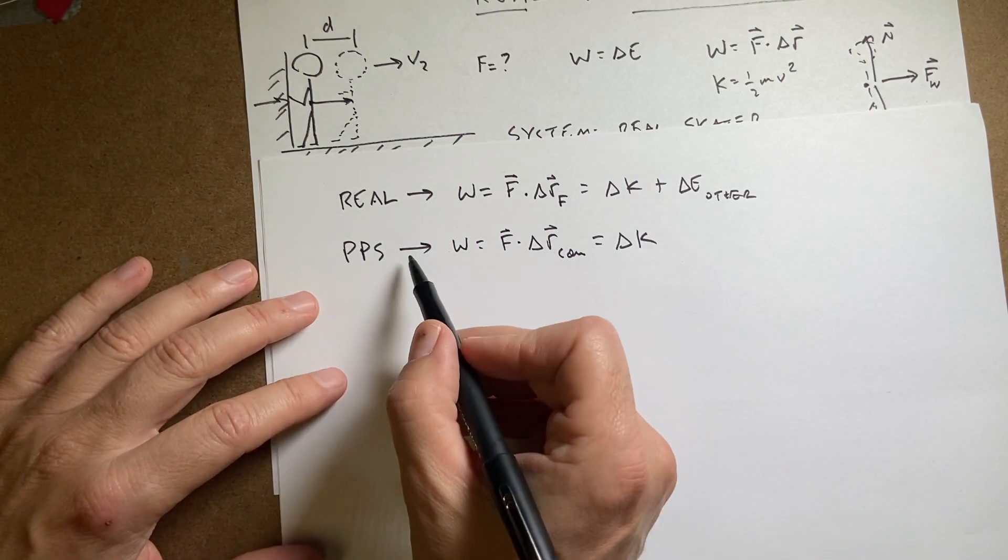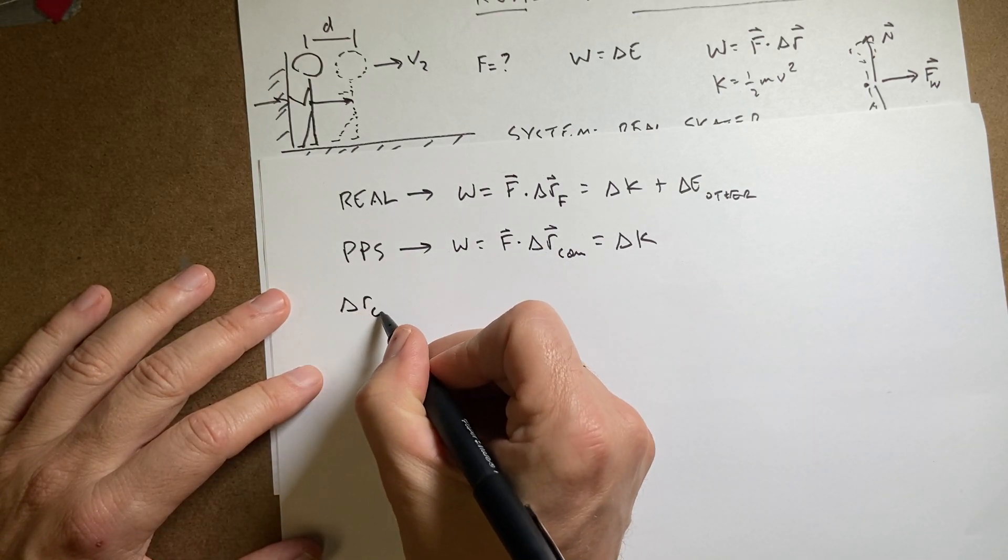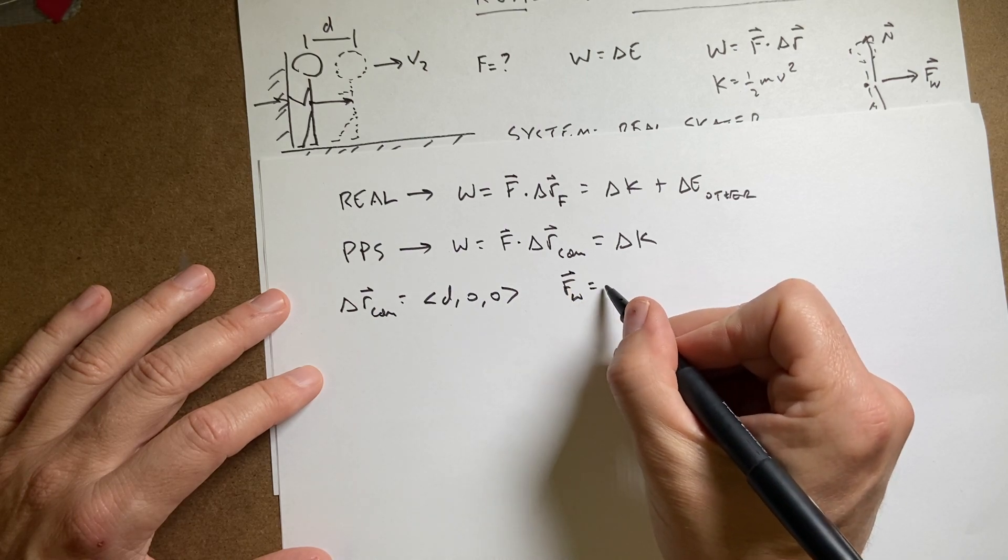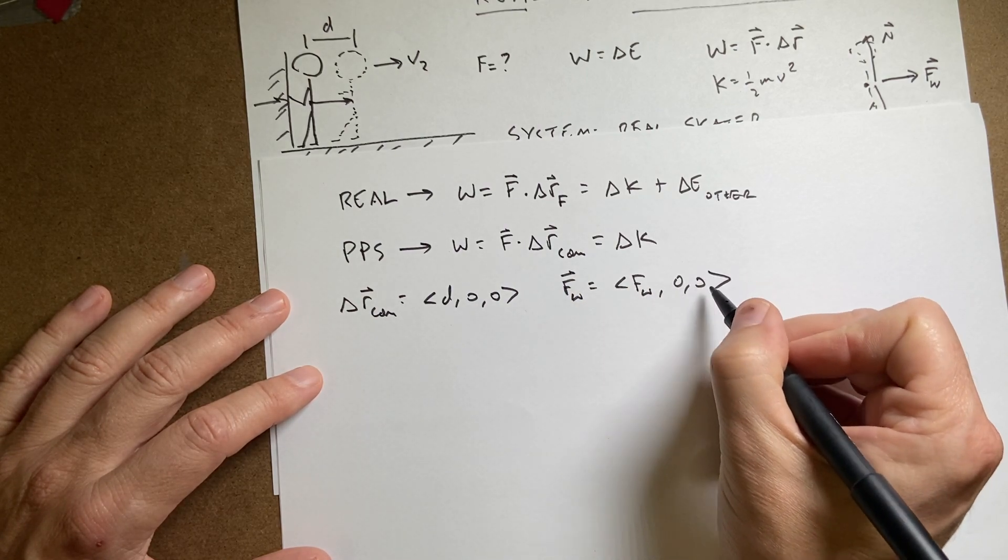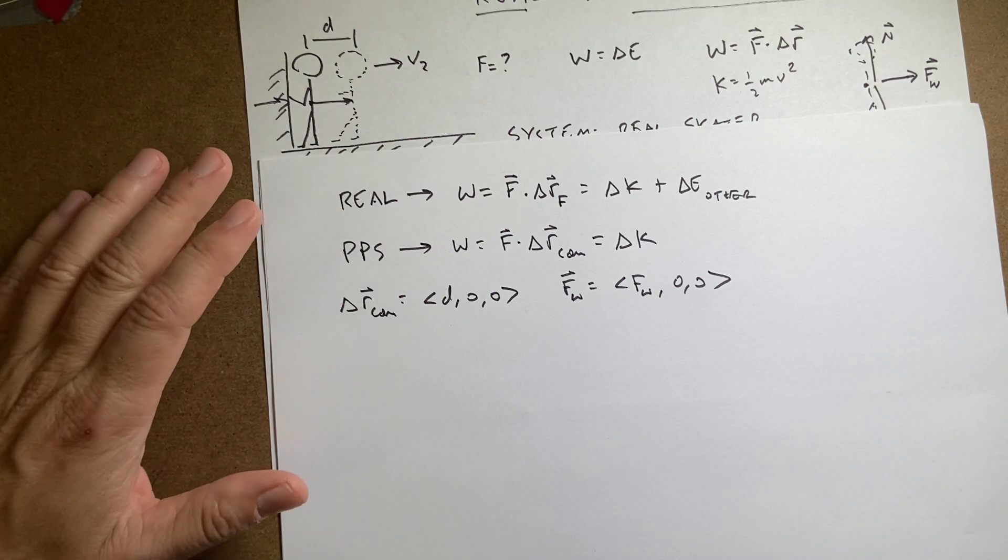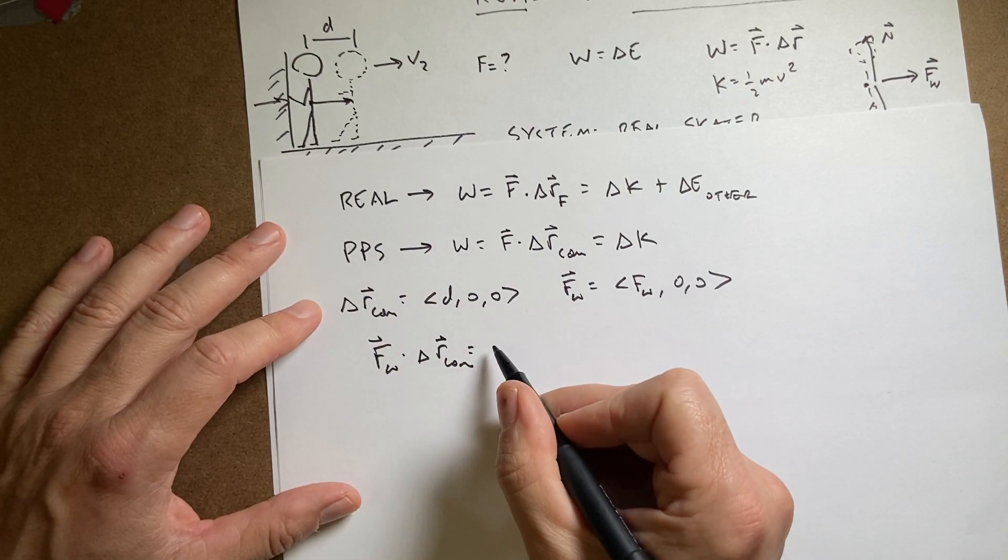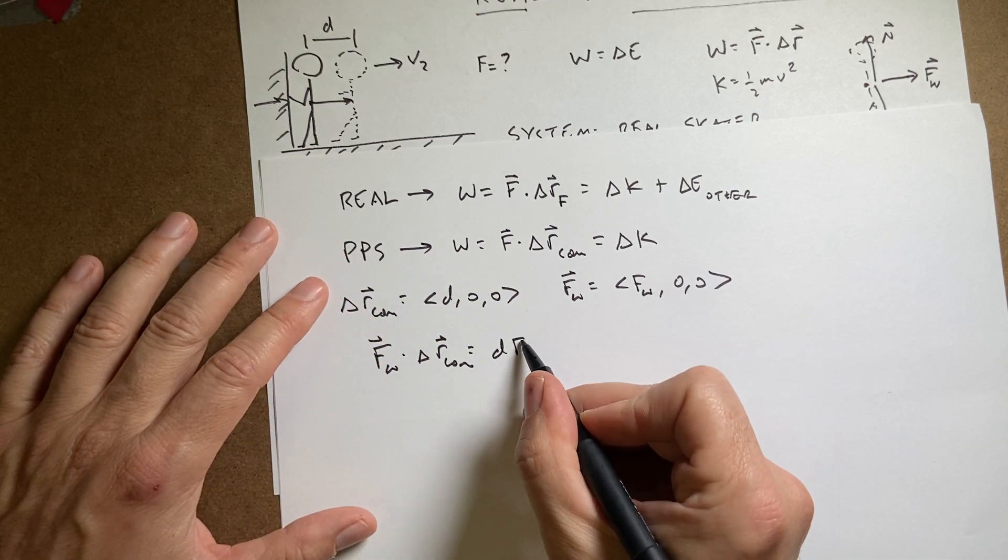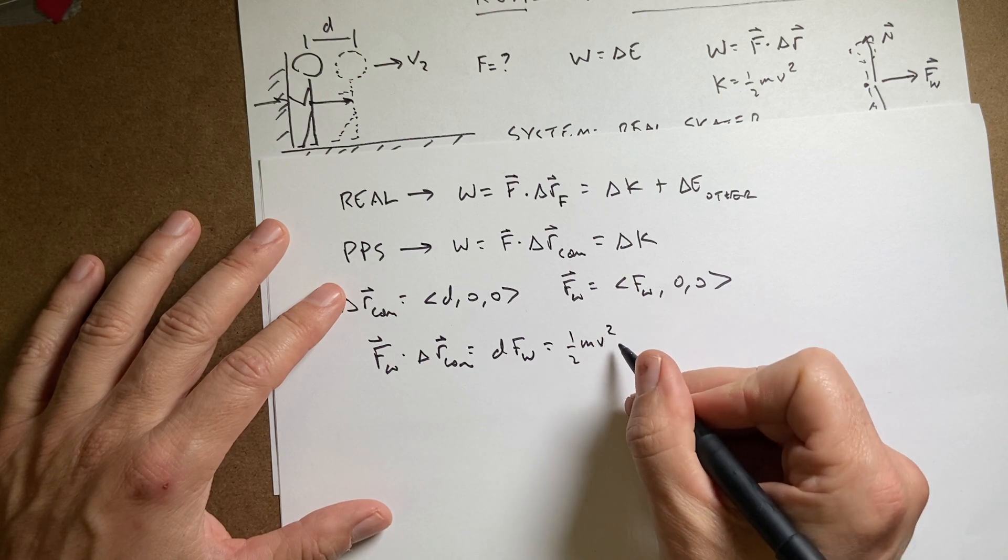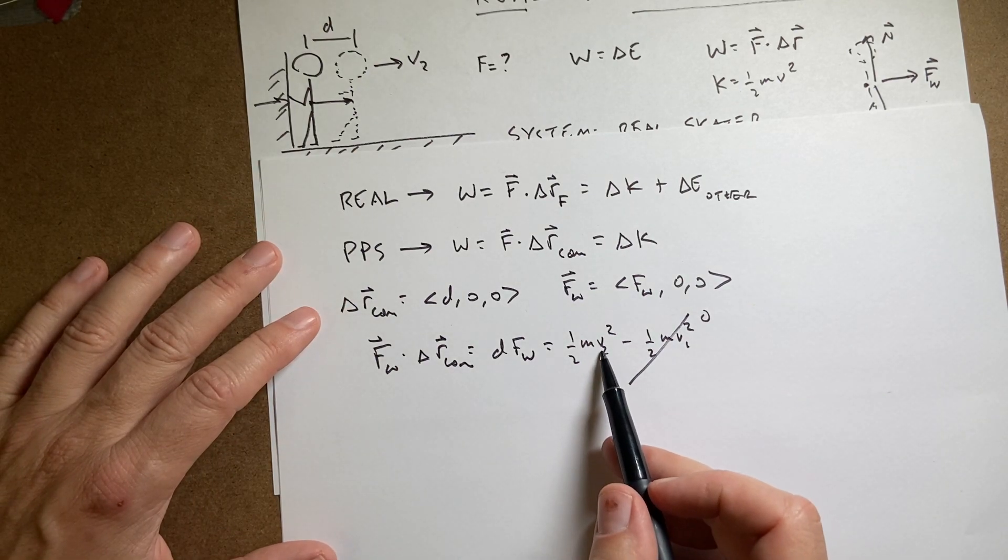And that's what we're going to do right here. So I again have, I can calculate the work. So delta R_center of mass is going to be D, zero, zero. F from the wall is going to be F_wall, zero, zero. I do need to consider the work done by the gravity and the normal force. But again, they're zero because they're perpendicular. So let's just leave those out. So now I can say F_wall dot delta R_center of mass equals D times FW plus zero times zero plus zero times zero. And that's going to be equal to the change in kinetic energy, one half m V2 squared minus one half m V1 squared. But the initial velocity is zero.